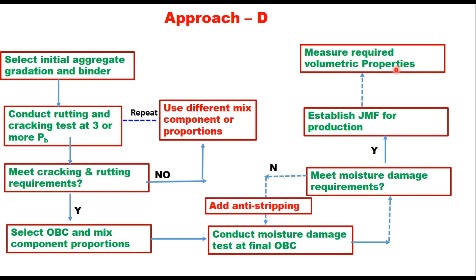Approach D: you select an initial aggregate gradation and binder and conduct rutting and cracking tests at three or more binder contents — these are called passing binder contents. Here, binder content is not pre-decided. You find out whether the cracking and rutting requirements are met; if not, you use different mix components or proportions and repeat rutting and cracking tests. Finally, you select the OBC and mix component proportions, conduct the moisture damage test at this OBC, and establish a job mix formula for production, then measure required volumetric properties.